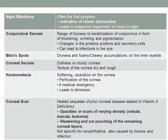To classify vitamin A deficiency: night blindness is one of the first symptoms, causing subjective impairment of vision during nighttime. Conjunctival xerosis refers to dryness due to keratinization of the conjunctiva in the form of thickening, wrinkling, and pigmentation, with changes in proteins and secretory cells. It can also lead to eye infections and Bitot's spots, which are dryness and foamy or cheesy accumulations on the inner eyelids.